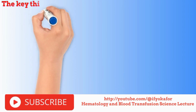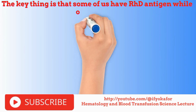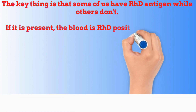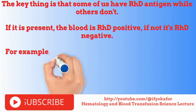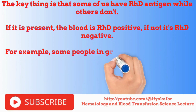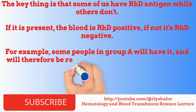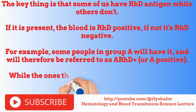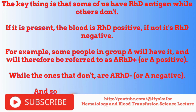Some of us have the ROH antigen while others don't. If it is present, the blood is ROH positive. If not, it is ROH negative. For example, some people in group A will have it and will therefore be referred to as ROH positive or A positive, while the ones that don't are ROH negative or A negative, and so it goes for groups B, AB, and O.